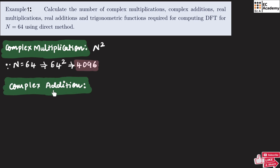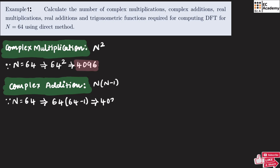Now let us find the complex addition. The complex addition for an n-point DFT is given as n(n−1). Since n equals 64, the complex addition is 64 × (64−1), so the number of complex additions will be 4032.